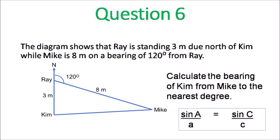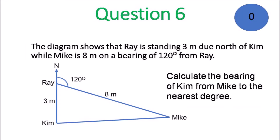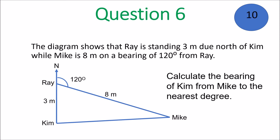Question 6: calculate the bearing of Kim from Mike to the nearest degree. You need the sine formula: sine A over a equals sine C over c. Use that to calculate the bearing of Kim from Mike to the nearest degree. Remember — it says Kim from Mike. Find that angle, and then you need to do something with it in order to calculate the bearing.